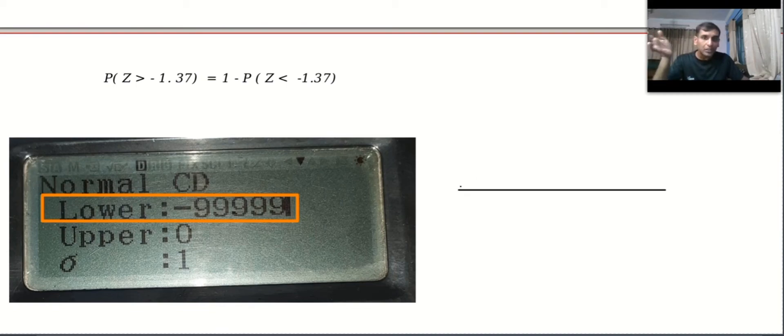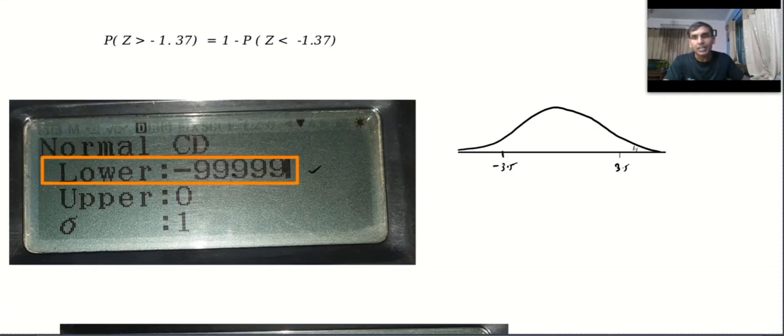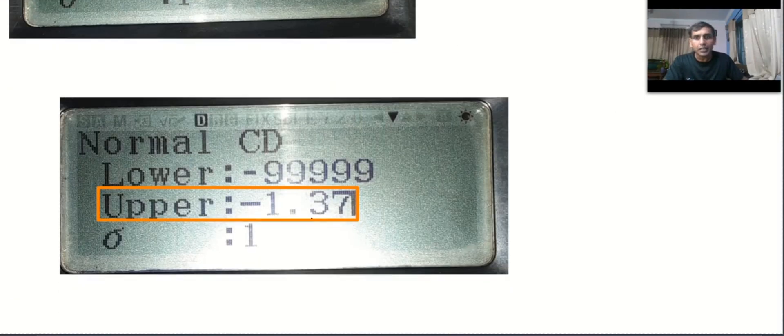So what we do is we plug in minus 99999 or any big number that you wish. But once more, let me tell you the advantage of normal distribution is it becomes an asymptote as near as minus 3.5 and in the positive direction 3.5. That means the values after that will be negligible, it will be like 0.000 so small. Anyway, I'm not taking risk.